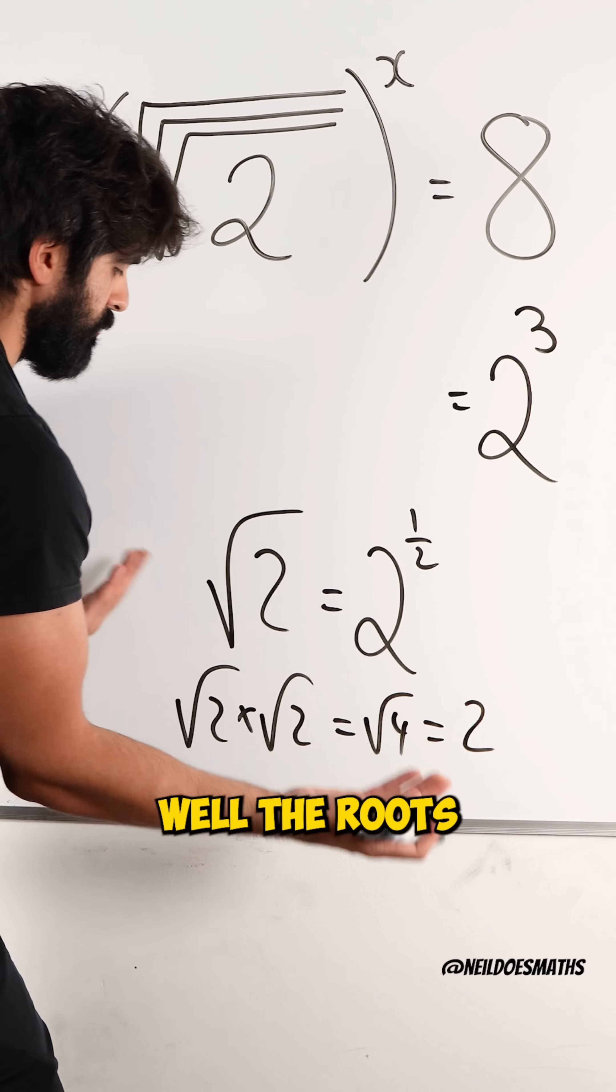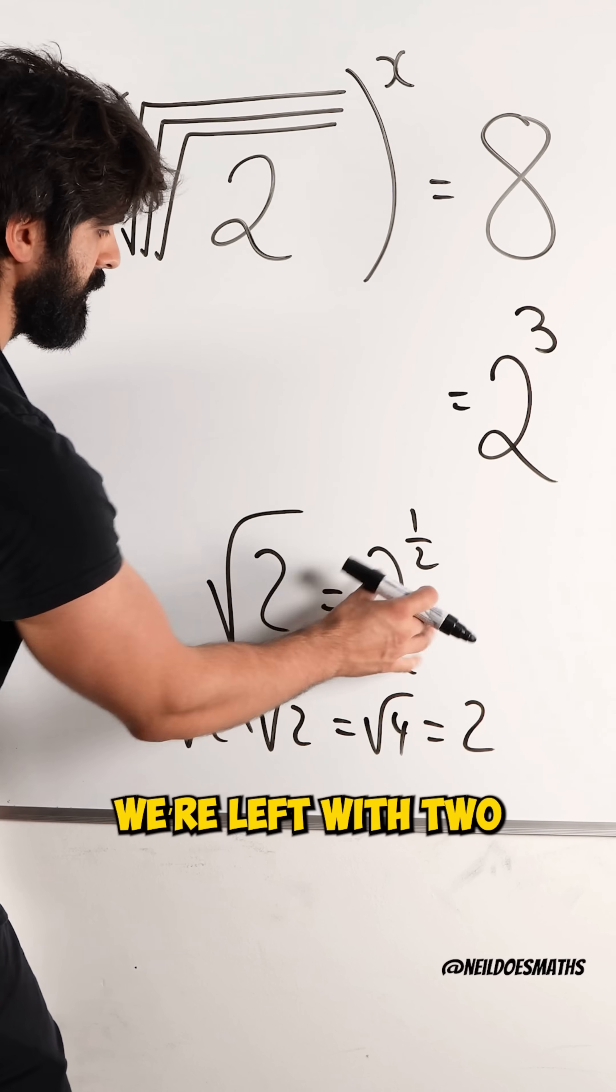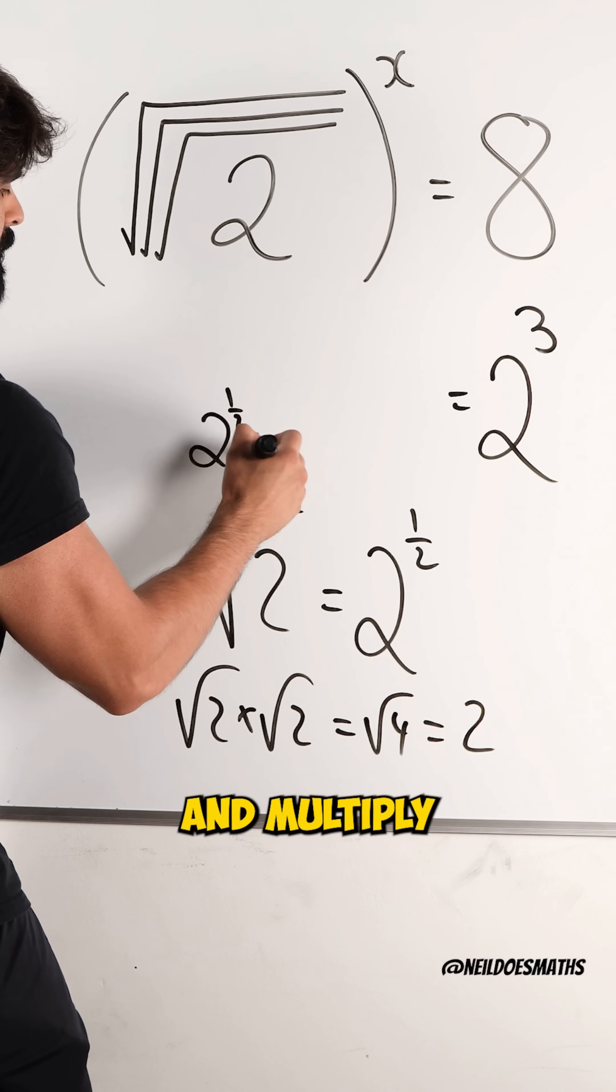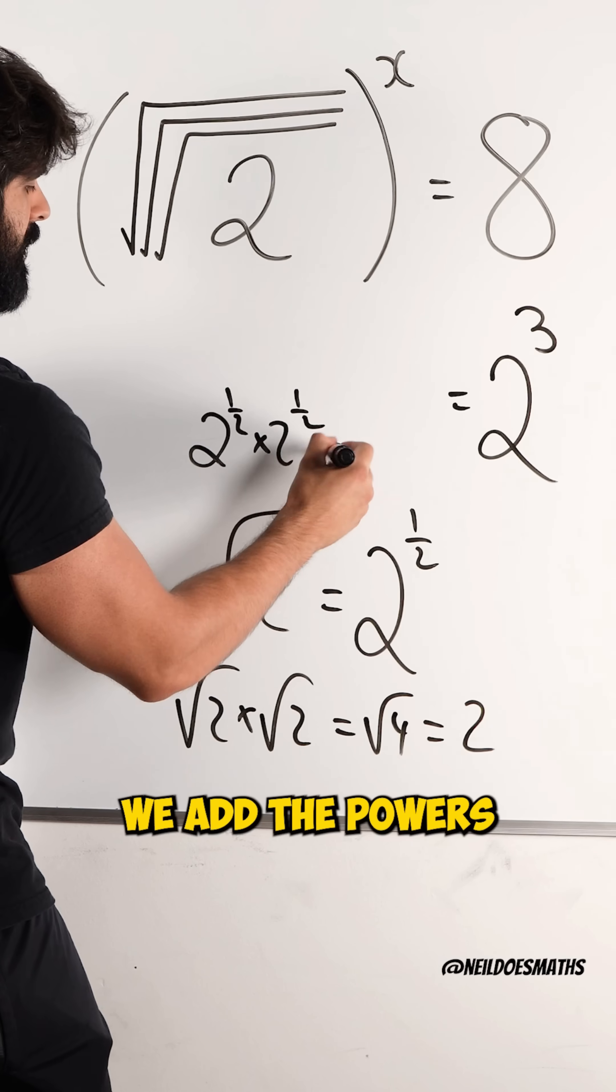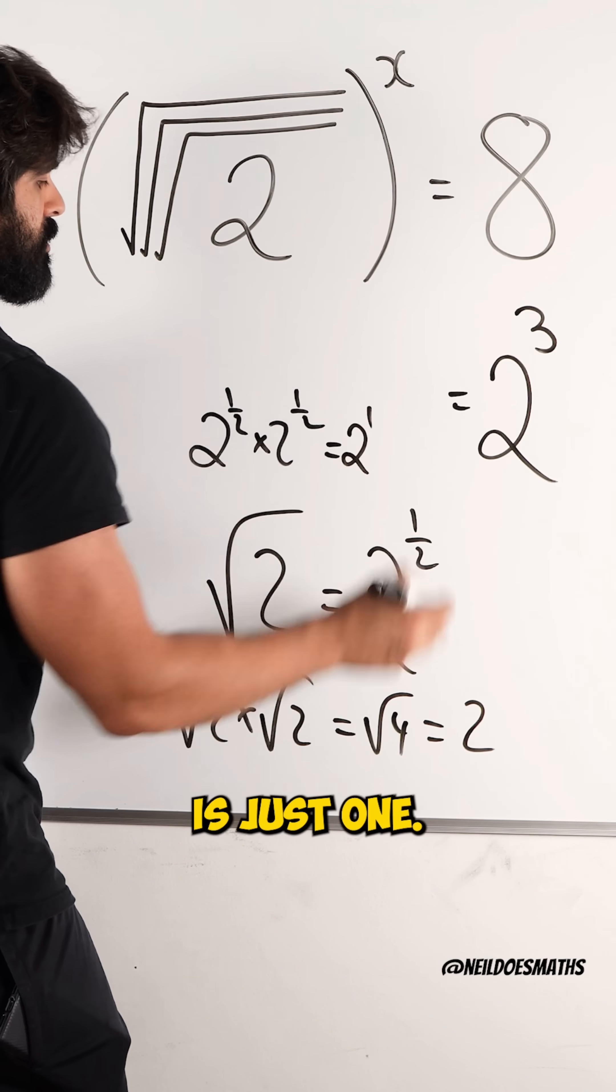So, multiplying two roots to each other, well, the roots just cancel out, we're left with 2. And if we take 2 to the power of a half and multiply it by itself, we multiply two numbers with the same base. We add the powers. A half plus a half is just 1.